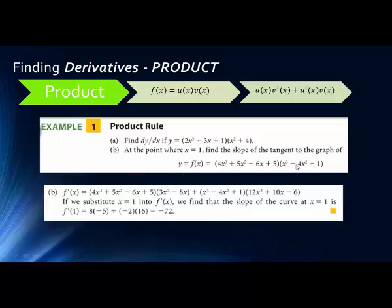The derivative of the second factor is 3x squared minus 8x — bring the 2 down in front, so 2 times 4 is 8x, and 2 minus 1 is 1 — times the first factor, plus the derivative of the first factor. The first factor has three terms with x: 12x squared (3 down in front, subtract 1), plus 10x (2 down in front, subtract 1), minus 6. So we get 12x squared plus 10x minus 6, times the second factor.